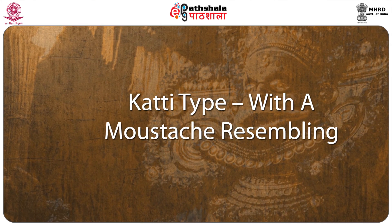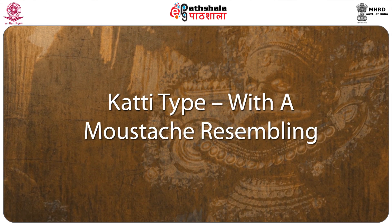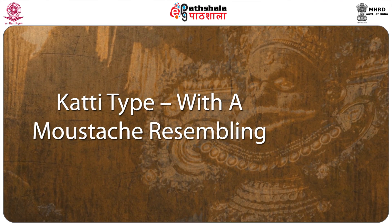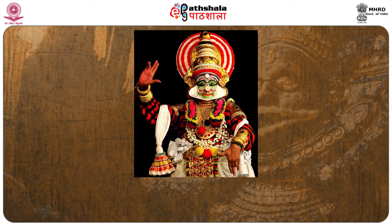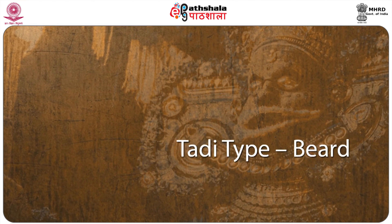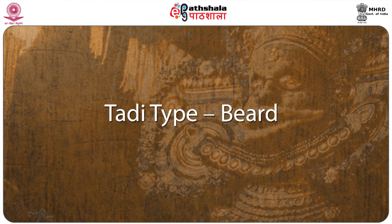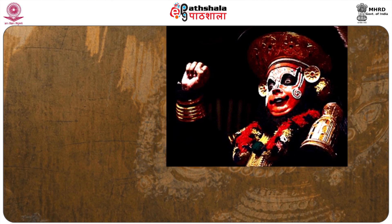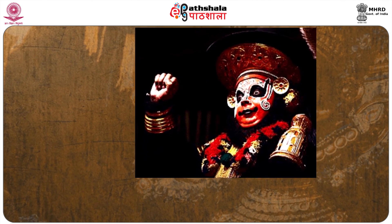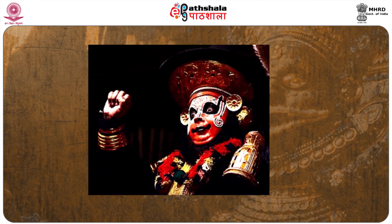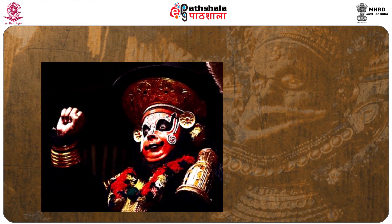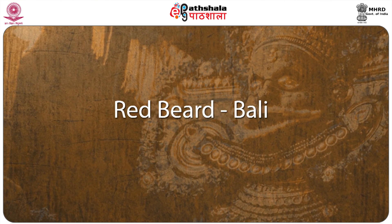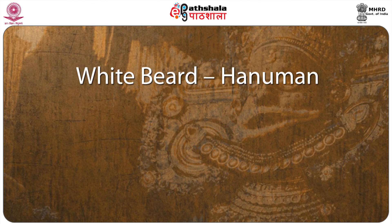Katti type has a moochat resembling an inverted knife. Katti represents royal and haughty characters treading the evil path, such as Ravana, Duryodhana, etc. Tadi type refers to the beard — Tadi is a demonic character or characters representing animal traits, with different color patterns according to character traits and quality. Black beard is for Sugriva, red beard for Bali, and white beard for Hanuman.